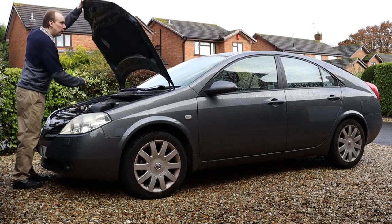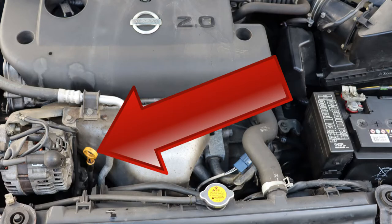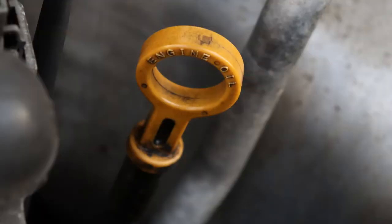Now open the bonnet and look for the handle of the dipstick. This one's mine. As you can see, it's easy to spot as it's in a prominent position and it's a bright colour. That is typical. However, if you can't find your dipstick, consult the car's manual.